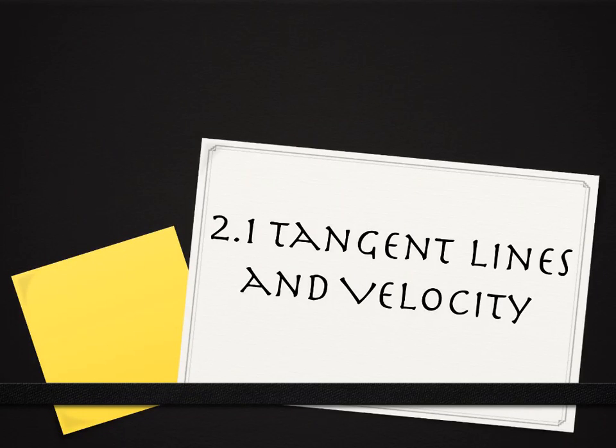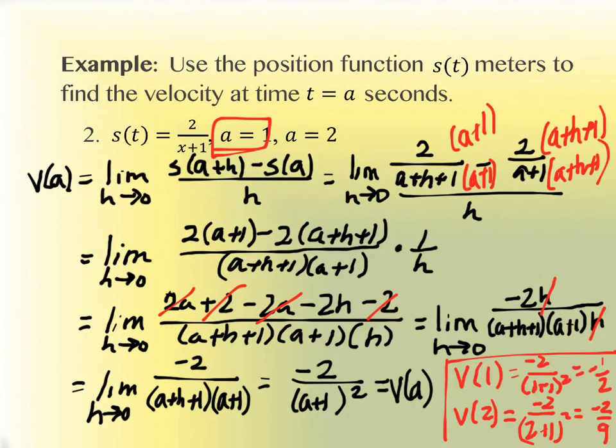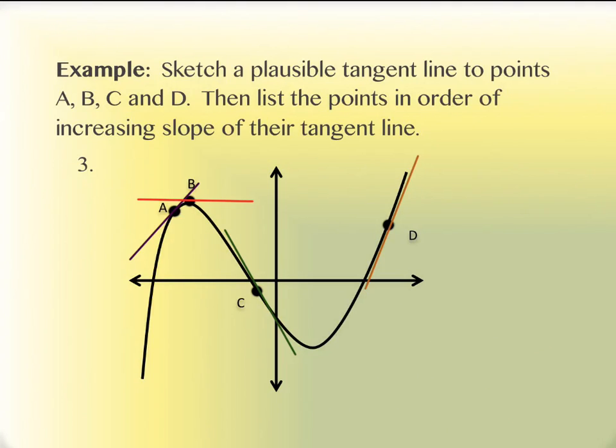Alright, last time we were in section 2.1 and we had gotten to the point where we were looking at a graph, right? And I think we had gotten to this screen right here and we had drawn those four tangent lines. Does that sound right to you guys? Excellent.